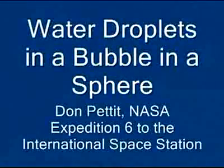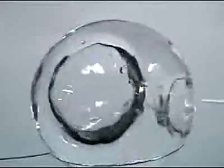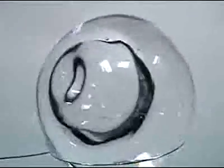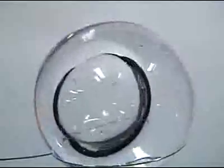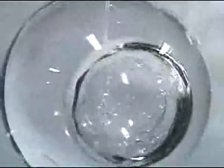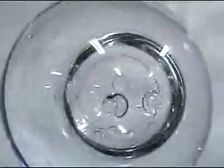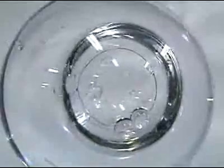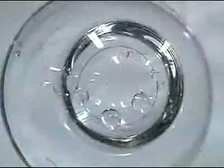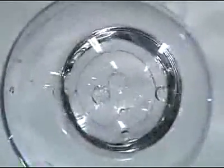Water droplets in a bubble in a sphere. Here we have a sphere of water 75 millimeters in diameter with an air bubble inside about 35 millimeters in diameter. We inject water droplets anywhere from 1 to 8 millimeters in diameter into the bubble and look at the resulting collision dynamics, where they collide with each other and the walls.